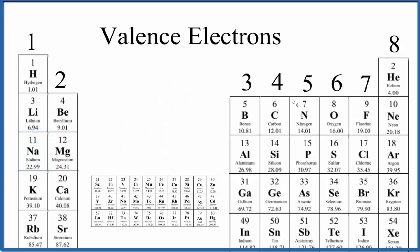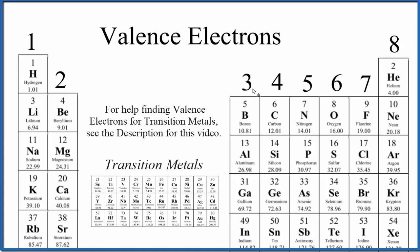As we go across the periodic table, we look at group 13, sometimes called 3a. These have three valence electrons, group 14 has four valence electrons, and so on.